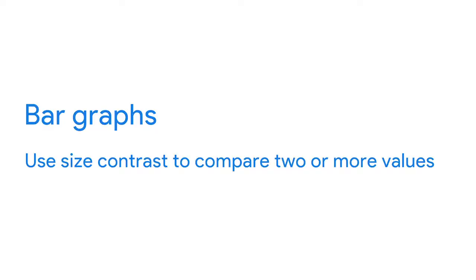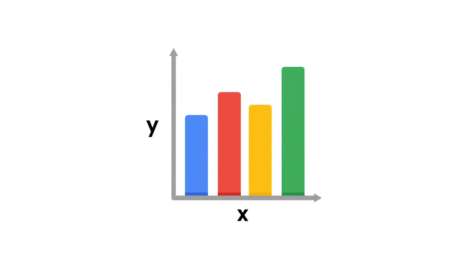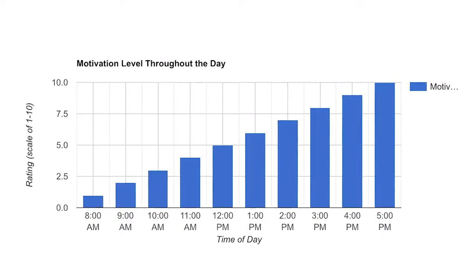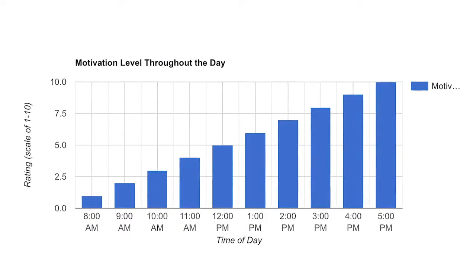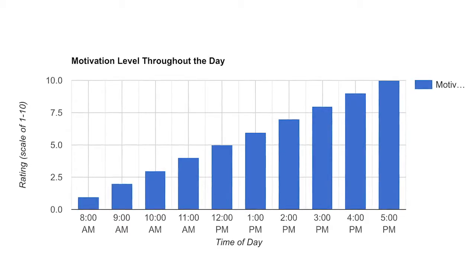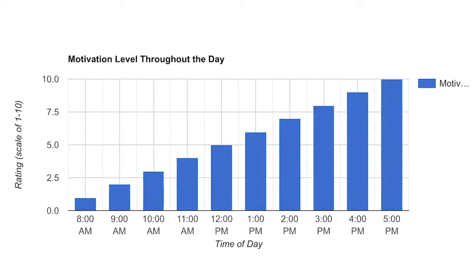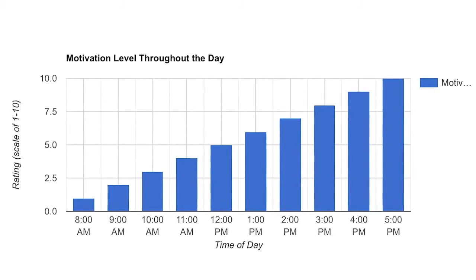A good place to start is a bar graph. Bar graphs use size contrast to compare two or more values. The horizontal line of a bar graph, usually placed at the bottom, is called the x-axis. In bar graphs with vertical bars, the x-axis is used to represent categories, time periods, or other variables. The vertical line, usually placed to the left, is called the y-axis, which usually has a scale of values for the variables. In this example, the time of day is compared to someone's level of motivation throughout the whole work day. Bar graphs are a great way to clarify trends — here, it's clear this person's motivation is low at the beginning of the day and gets higher by the end. This type of visualization makes it very easy to identify patterns.